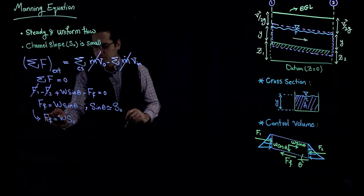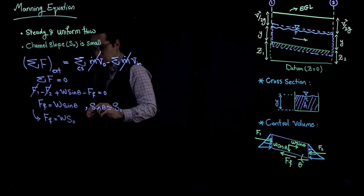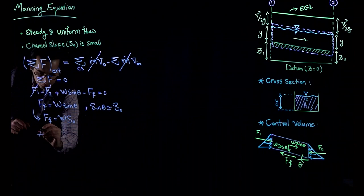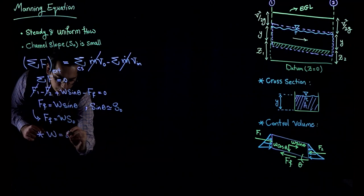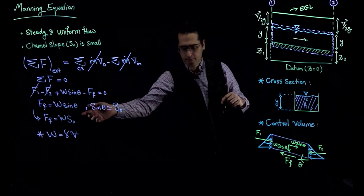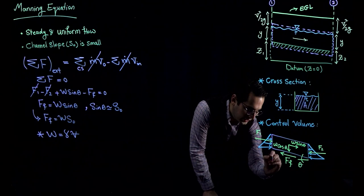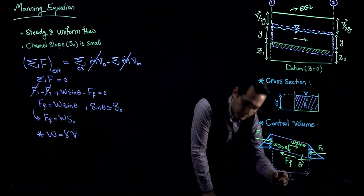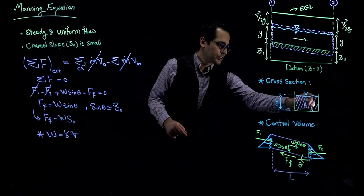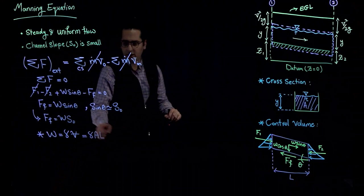Now we simplify F sub f and W as much as possible to write this equation in terms of shear stress and velocity. Starting with W: in fluid mechanics, the weight of the fluid is equal to gamma — specific weight — times volume of the fluid. Gamma here is the specific weight of water, and volume is the cross-sectional area times the length L of the control volume. So W equals gamma times A times L.